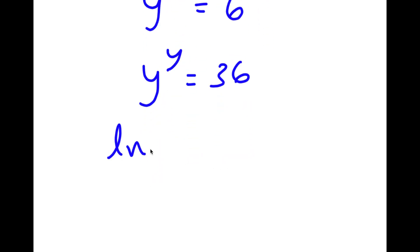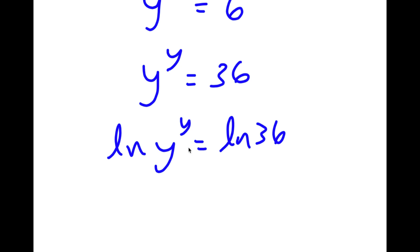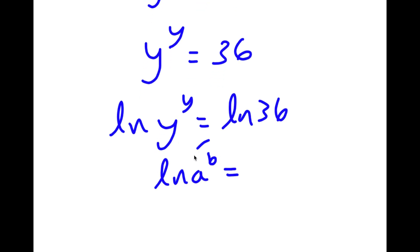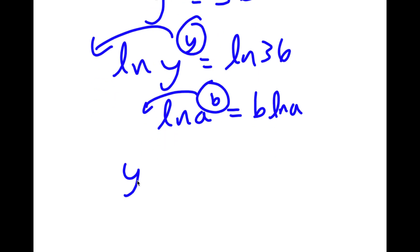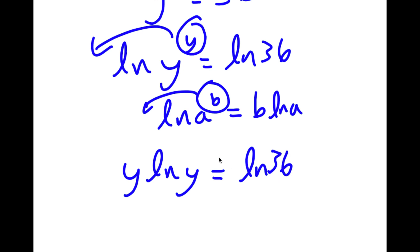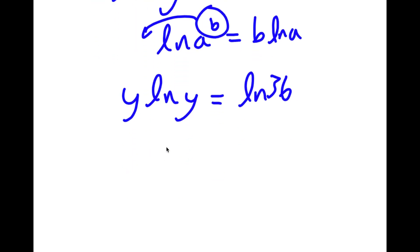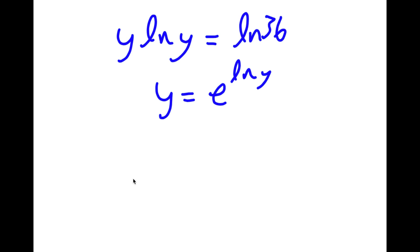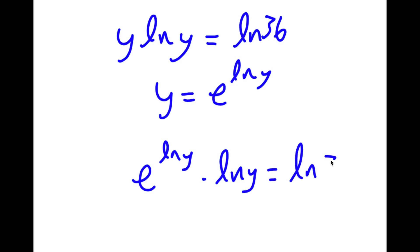Now if I take the ln on both sides, I get ln of y to the power of y is equal to ln 36. If I have something in the form ln a to the power of b, I can move the exponent b to the front, so that equals b times ln a. In this case I can move y to the front, so now I have y times ln y is equal to ln 36. Now y is the same thing as e to the power of ln y because the e and ln cancel out. So I'm going to replace y with e to the power of ln y, giving me e to the power of ln y times ln y is equal to ln 36.